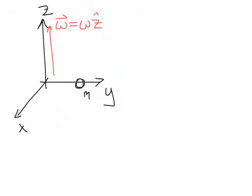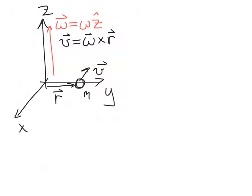We can calculate the resulting linear velocity vector by taking the cross product of the angular velocity vector with the position vector r for our particle. When we cross omega into r, we get a velocity vector which points inward along the negative x-axis. You can show that for this angular velocity vector, the point particle will execute circular motion in the x-y plane, by taking the cross product omega crossed into r for each point along its trajectory.